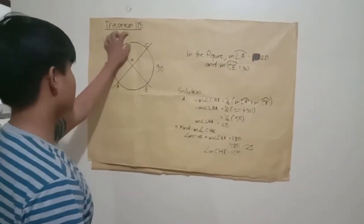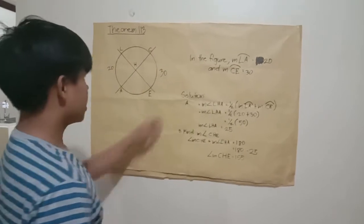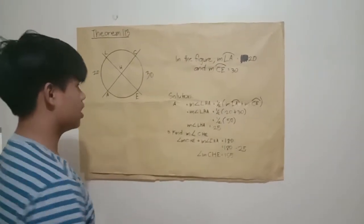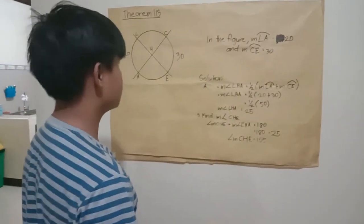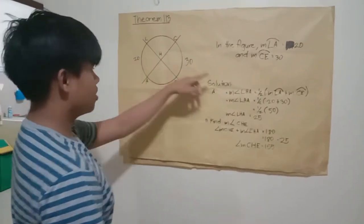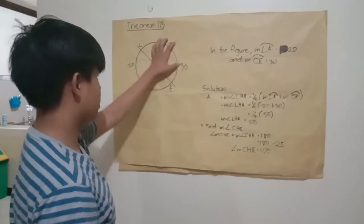I am going to be discussing theorem R&D 13. In the figure, measure arc LA equals 20 degrees, and measure arc CE equals 30 degrees.